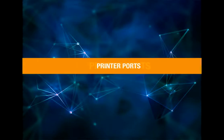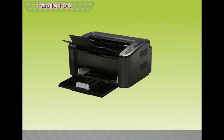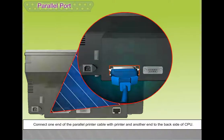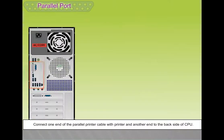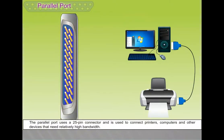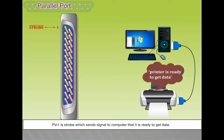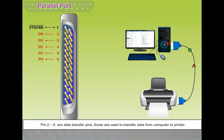Printer ports include parallel, serial, USB, and network ports. Parallel port: connect one end of the parallel printer cable to the printer and the other end to the back of the CPU. The parallel port uses a 25-pin connector and is used to connect printers, computers, and other devices. It is quite slow at 2 megabits per second. Pin 1 is Strobe, which sends a signal to the computer that it is ready to get data. Pins 2 to 9 are data transfer pins used to transfer data from computer to printer.